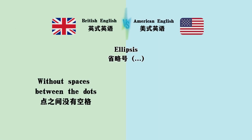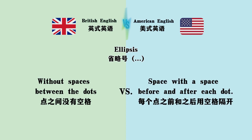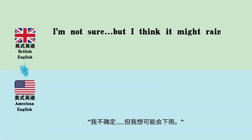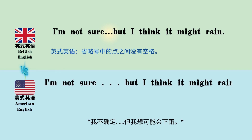Ellipses: without spaces between the dots versus with a space before and after each dot. 'I'm not sure...but I think it might rain' versus 'I'm not sure . . . but I think it might rain.'